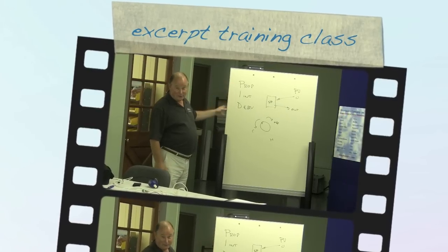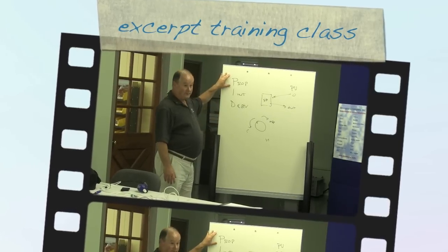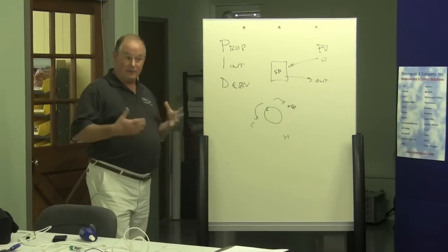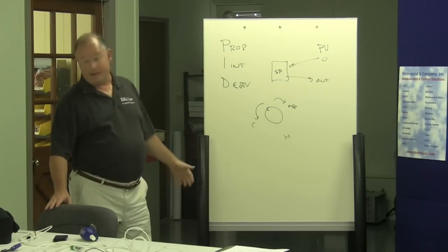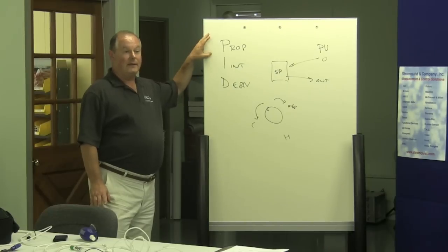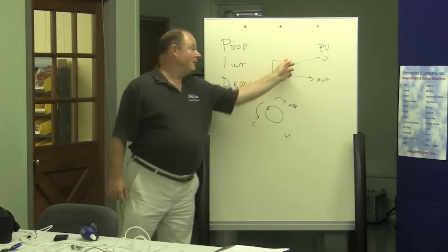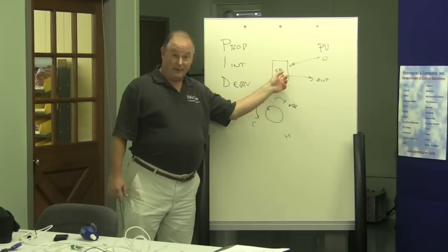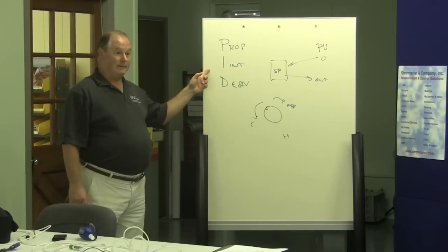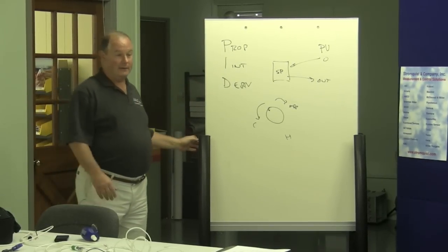Let's talk about the PID control that the controller does — Proportional, Integral, and Derivative. It's kind of something we do ourselves without even thinking about it. Proportional deals with how big is the difference between what I want, the set point, and the process variable. Integral has to do with how long it's been off.